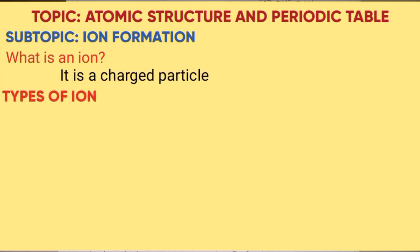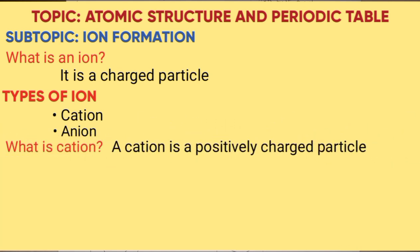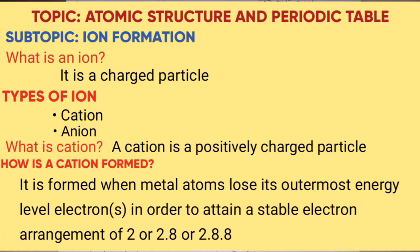Then we look at the types of ions: cation and anion. Let's start by looking at what is a cation. A cation is a positively charged particle. It is formed when a metal atom loses its outermost energy level electrons in order to attain a stable electron arrangement of 2 or 2.8 or 2.8.8.